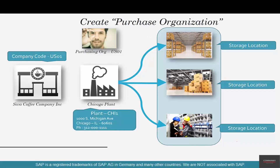The next enterprise structure element is called a purchase organization. A purchase organization is a different kind of org element — it's not like a plant or a company code that you can visualize. A purchase organization tries to divide your enterprise or company through the lens of purchasing.